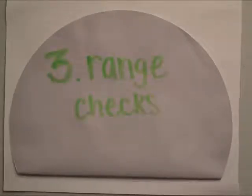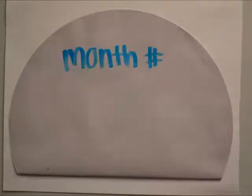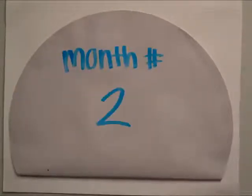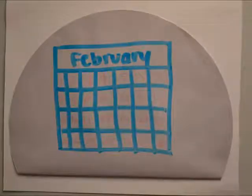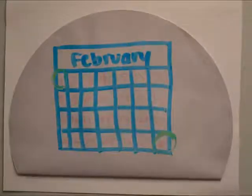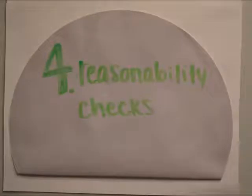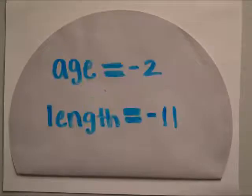Range checks guarantee that variables are within an appropriate range of numeric values. The month number should go from 1 to 12. Let's examine month 2. In February, the date range goes from 1 to 28. Reasonability checks make sure that values are realistic for the variable inputted into the program. For example, age and measurements cannot be negative.